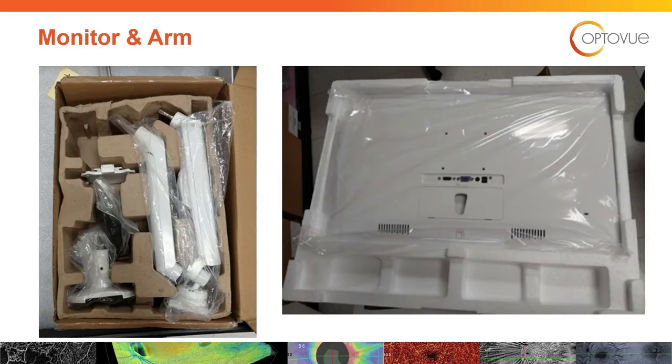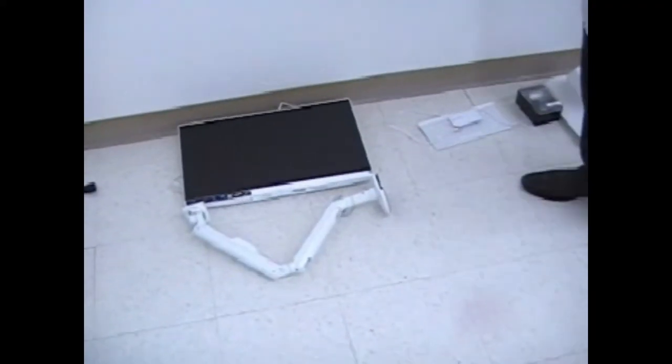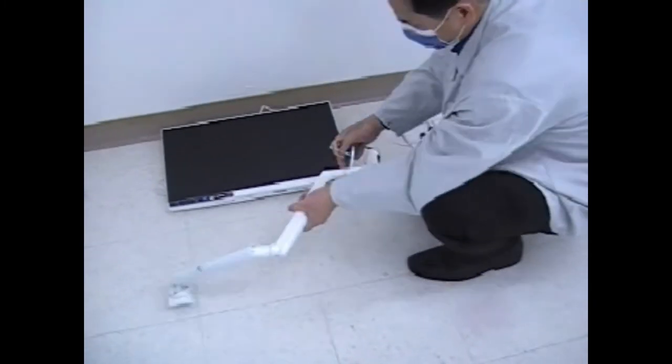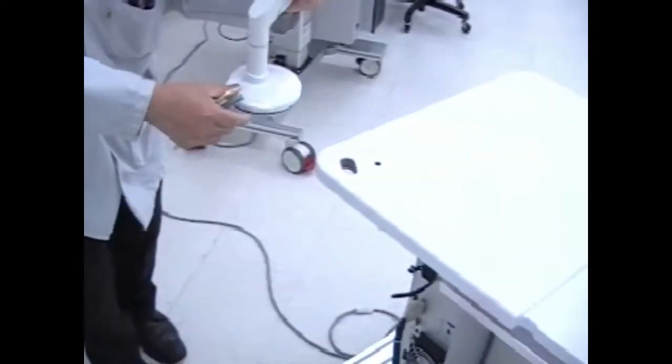Assemble the monitor arm parts. They snap together and have locking set screws. The rationale for doing the assembly now is it's easier to put it onto the table before the computer is attached.